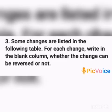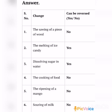Some changes are listed in the following table. For each change, write in the blank column whether the change can be reversed or not. If it is a reversible change write yes, and if it is an irreversible change write no. The first change: the sawing of a piece of wood. Can it be reversed? No — once we saw the wood, we cannot get the original piece back. So the answer is no.